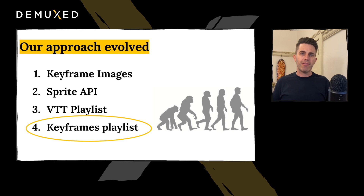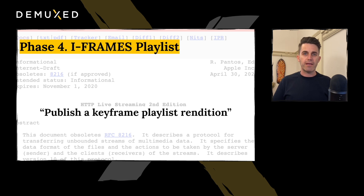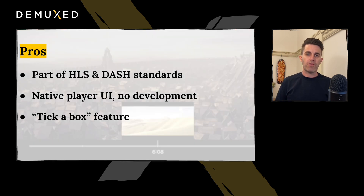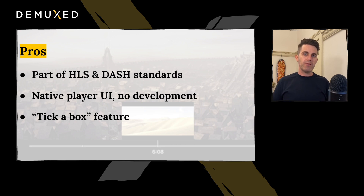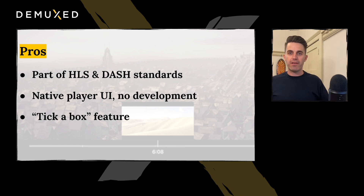Keyframe playlist is part of a spec for video delivery. If you read the Pantos HLS spec, you can publish a keyframe playlist rendition. If you read DASH, it reads a bit differently but it's pretty obvious what it is. In the same way you have a video rendition and an audio rendition, you can have a keyframe rendition. The beauty of this standard is that it's a native integration — you don't have to develop anything once you're publishing that rendition. The Apple TV just picks it up and works with it, and for a lot of encoders it's just a tick-box feature — you just turn it on, it publishes that rendition, and away you go.